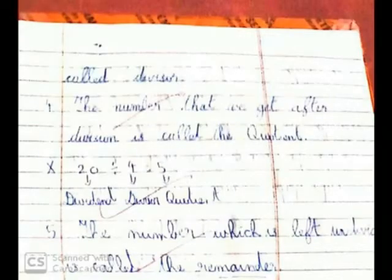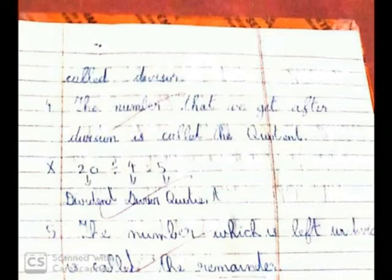The number that we get after division is called the quotient. For example, 20 divided by 4 equals 5 — here, 5 is the quotient, 4 is the divisor, and 20 is the dividend. The number which is left undivided is called the remainder.